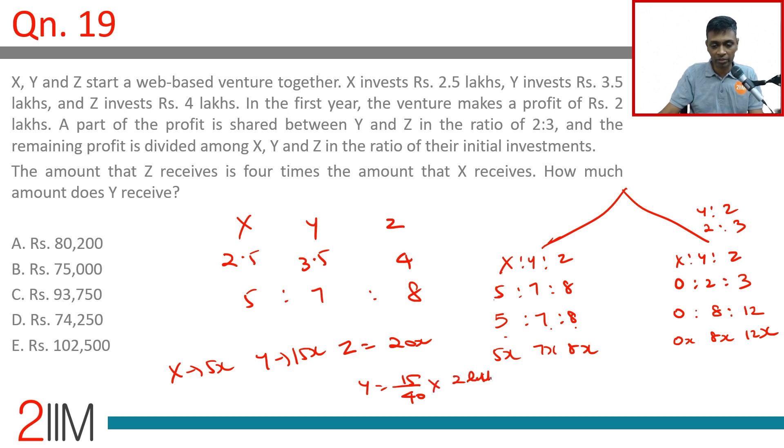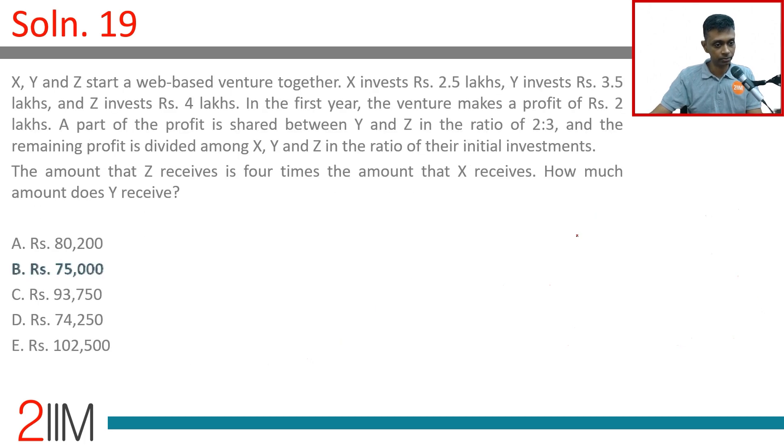40 times 2 lakhs. 2 lakhs by 40 is 5,000. 15 into 5,000 is 75,000. Done! This is the right approach - expressing 2:3 as 8 and 12 makes life so much simpler.